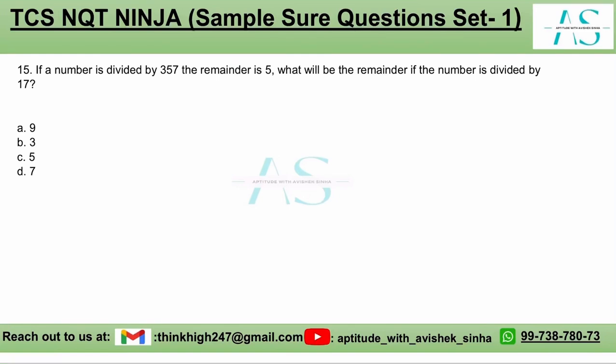If a number is divided by 357, in that case, the remainder is equal to 5. Now, my question is, upon dividing the same number by 17, what will be my remainder? And we have four options for the remainder.